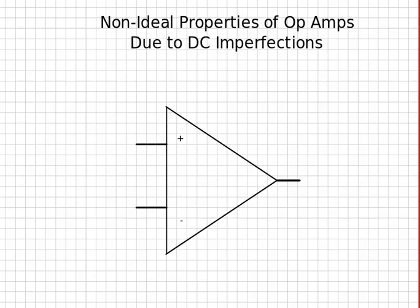We're talking about the DC imperfections that cause the output offset voltage. These, of course, as you saw before, come from the DC power supplies that power the op-amp.